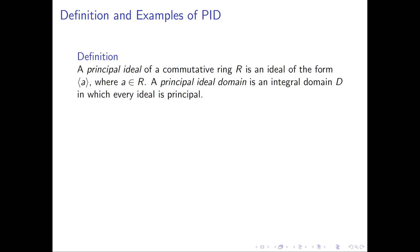The last thing I'd like to do in this series of videos is give a couple of definitions: the definition of a principal ideal and the definition of a principal ideal domain, which we're going to denote by PID. A principal ideal of a commutative ring R is an ideal of the form, the ideal generated by a, where a is some specific element of the ring. A principal ideal domain is an integral domain in which every single ideal of the domain happens to be a principal ideal.